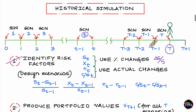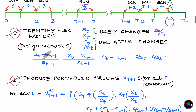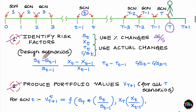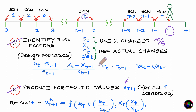Once you have all these scenarios, move on to Step 2. Step 2 is about producing the values of your portfolio as of the close of day T+1. Let the value of the portfolio as of the close of T+1 be V_{T+1}, and work out the portfolio values for all T scenarios applied one by one.